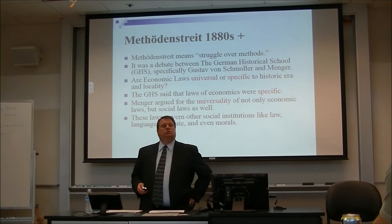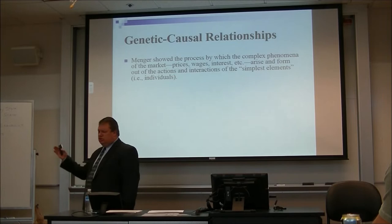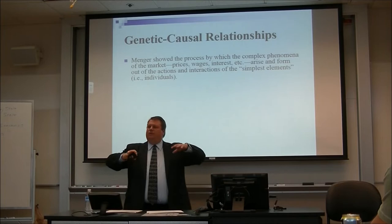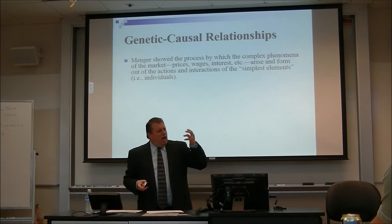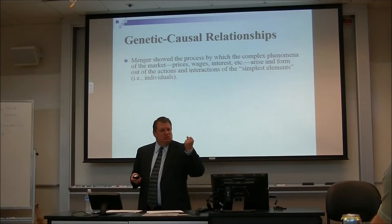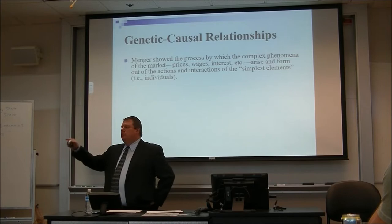Menger's approach was this thing called the genetic causal relationship. What he's saying is that there's a process — how do we uncover complex phenomena going on in the market: prices, wages, interest? He says we have to break it down to the simplest element and build up from there. The simplest element is the genesis, the genetic part, and then we start looking at causal relationships.